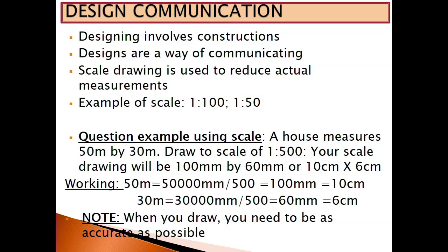An example of a question on scale: a house measures 50 meters by 30 meters, and you are asked to draw it to a scale of 1:500. Your scale drawing will be 100 mm by 60 mm, or 10 cm by 6 cm. To get this, you say 50 meters equals 50,000 mm, divide by 500, and get 100 mm (10 cm). Do the same for 30 meters: 30,000 mm divided by 500 gives 60 mm (6 cm). When you draw on paper, you need to be very, very accurate — if it is 10 cm, it needs to be exactly 10 cm.